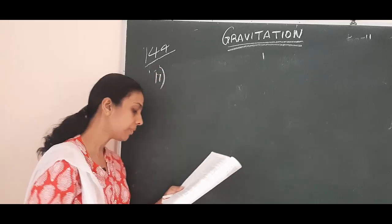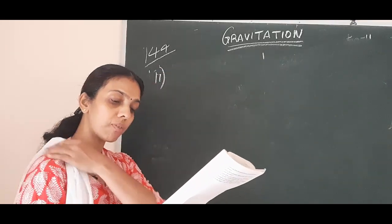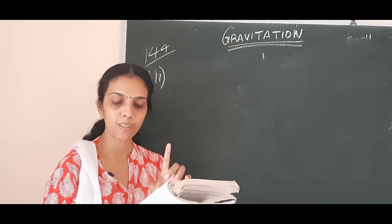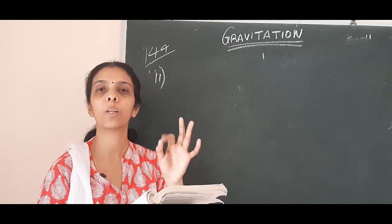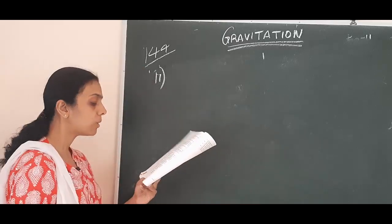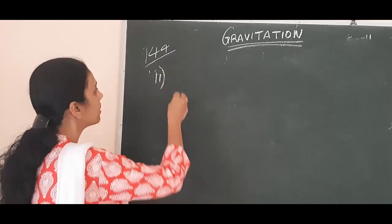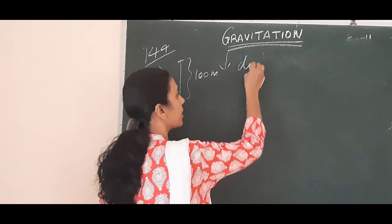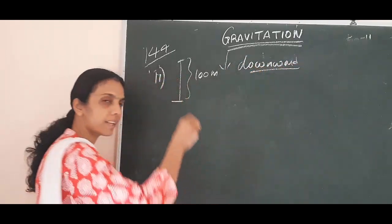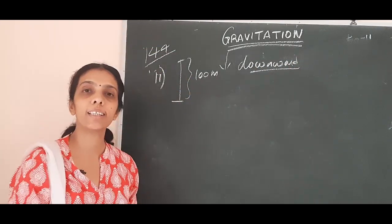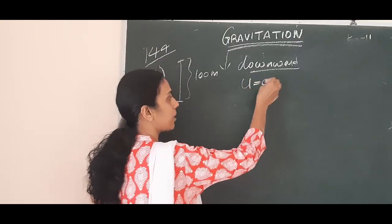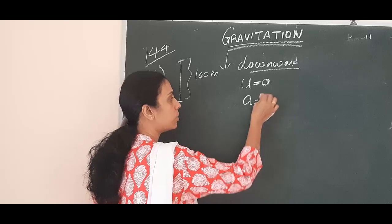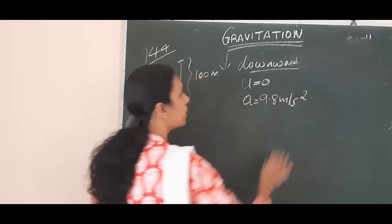Now question 17. A stone is allowed to fall from the top of a tower 100 meter high, and at the same time another stone is projected vertically upwards from the ground with a velocity of 25 meter per second. Calculate when and where the two stones will meet. For the downward motion: a stone is allowed to fall, so initial velocity is 0 and acceleration is 9.8 meter per second square.